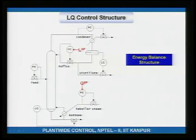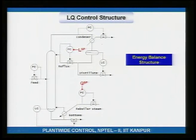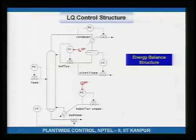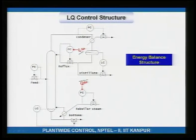The first is called the LQ control structure. In this structure, the reflux drum level is controlled by the distillate, the bottom sump level is controlled by the bottoms product stream, and the pressure is controlled by adjusting the coolant flow rate in the condenser. Once these level and pressure loops are fixed, the operator can adjust the reflux set point (L) and the steam flow set point (Q) to get the desired separation. Hence it is called the LQ structure.